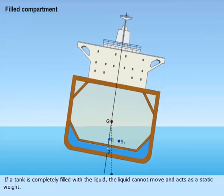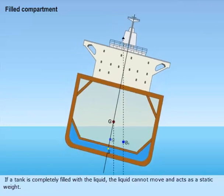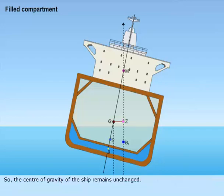If a tank is completely filled with liquid, the liquid cannot move and acts as a static weight. So the center of gravity of the ship remains unchanged. The graphic shows the listed ship when the tank is filled with liquid.